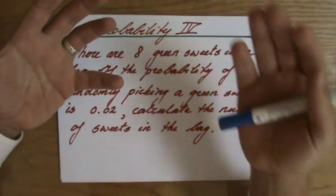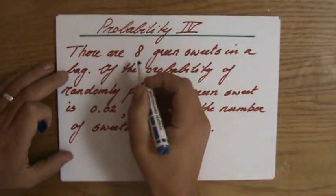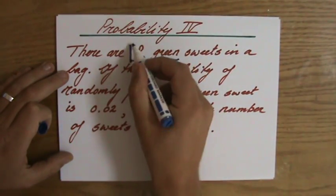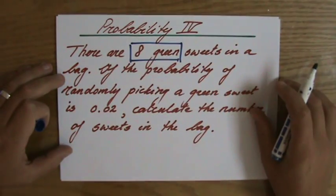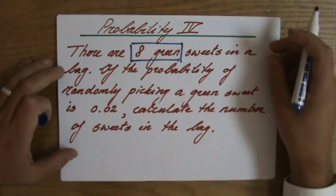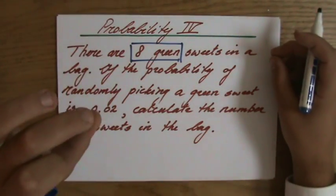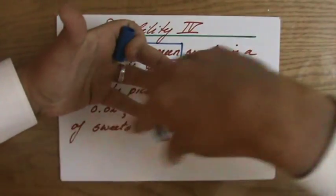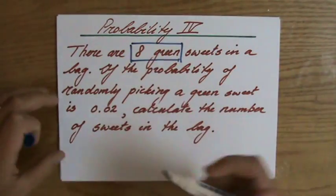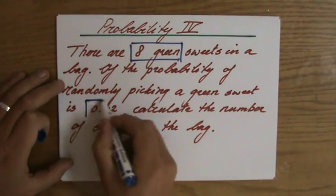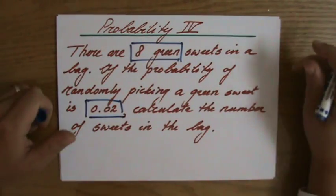Okay so I'm picturing this bag full of sweets and eight of them are green. I'm just going to highlight the important information. So I have all sorts of colors, eight of them are green. And if I take one out randomly, so I close my eyes, I put my hand in the bag, I take the sweet out, I have a chance of 0.02 to get a green sweet.